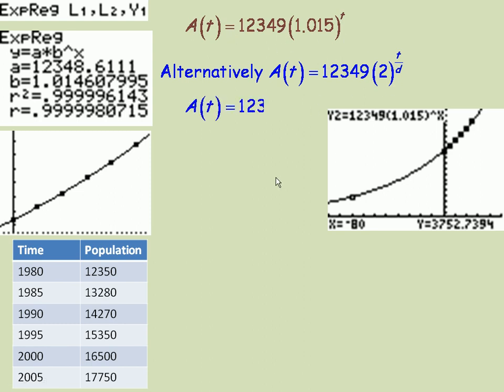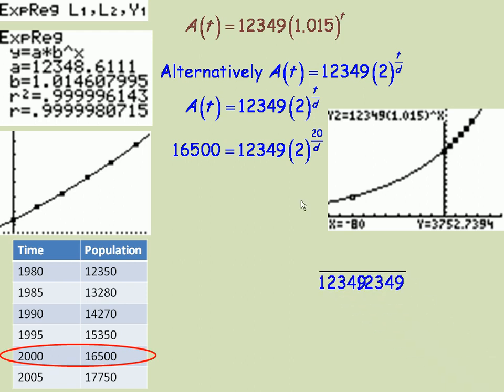And what I'm going to do then, there's my equation. I'm going to pick a data point from the chart, and there's no particular reason why I picked this one, but I just chose that one. And I'm going to substitute in this is my population for a time, and of course the time would be 20 years. So we'll put 20 in place of time and solve for d. So the first thing I would do is divide out the 12,349.